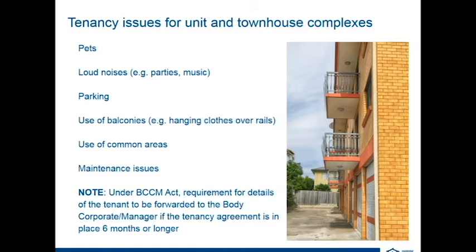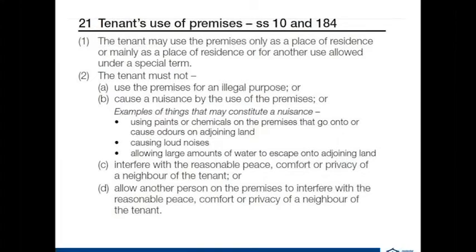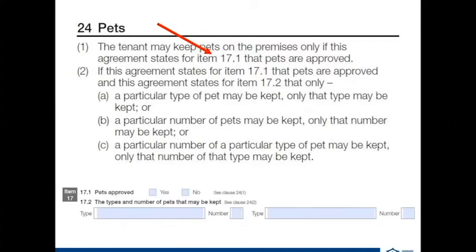In the tenancy agreement under the tenant's use of the property, item 2C states the tenant must not interfere with the reasonable peace, comfort, or privacy of a neighbour, and item 2D covers allowing another person to do that. Item 17.1 covers whether pets are approved or not, and this is all part of your general tenancy agreement.